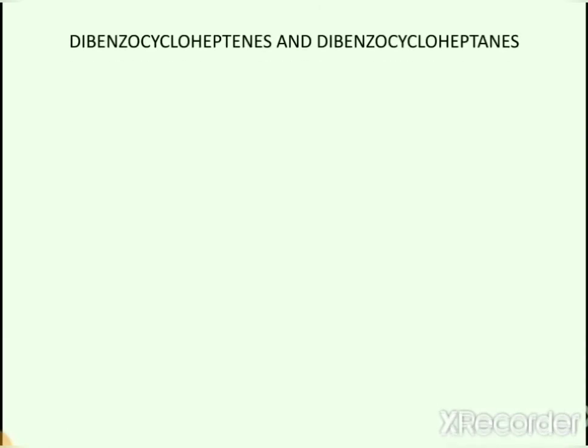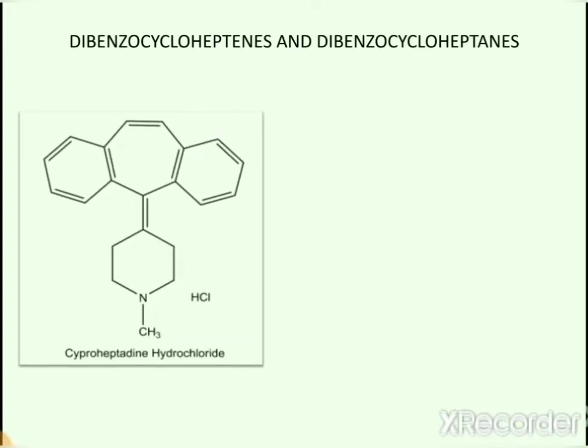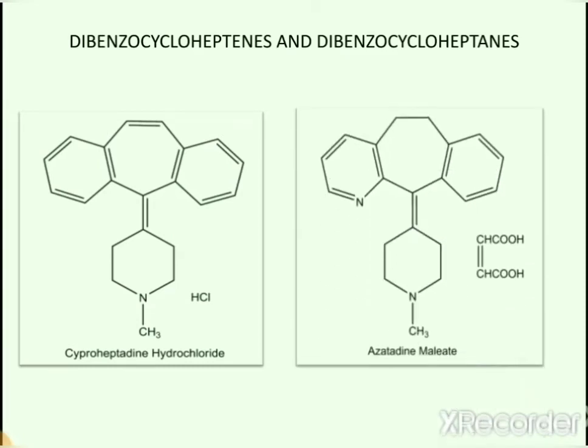The next subcategory of H1 antihistaminics is dibenzocycloheptenes. The first drug of this category is cyproheptadine hydrochloride, and the second drug of this category is acrivastine maleate.